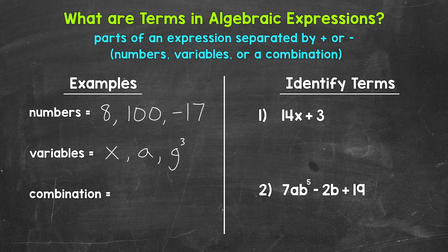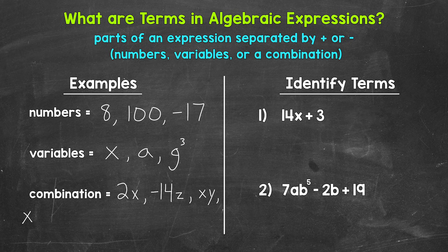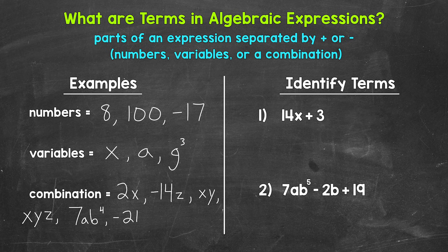And then lastly, we can have a combination of numbers and variables. For example, 2x — a number times a variable, 2 times x. Or negative 14z — negative 14 times z. We can even have variables times variables, for example x times y, or more than two variables like x times y times z. We can also have numbers, variables, and exponents together — something like 7ab to the power of 4, meaning 7 times a times b to the power of 4. Or another example would be negative 21x squared, meaning negative 21 times x squared.